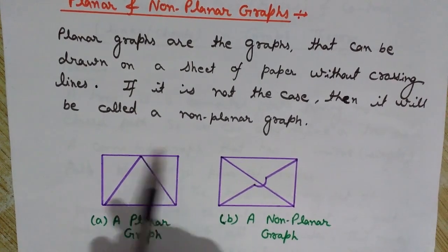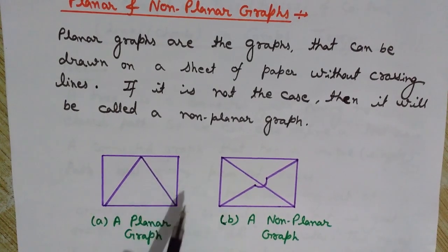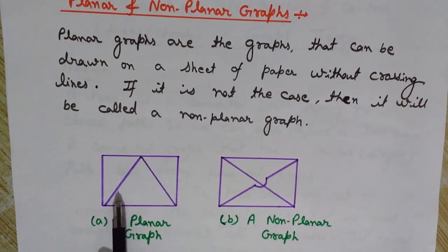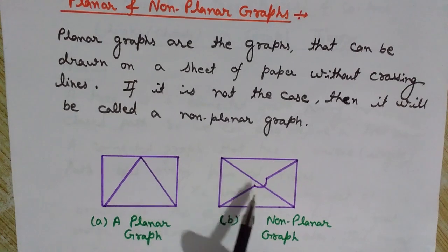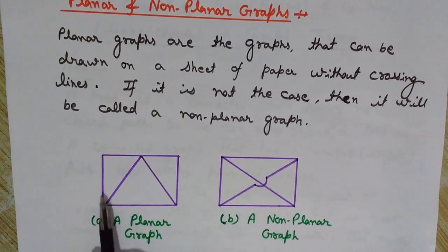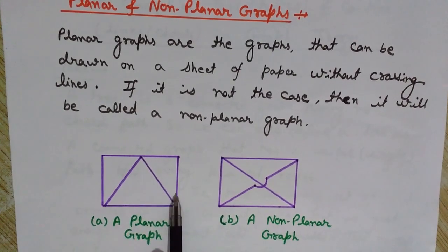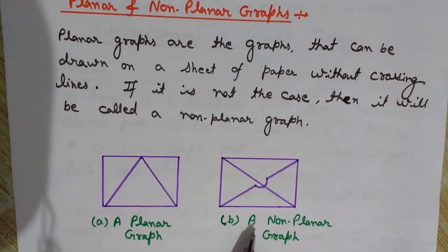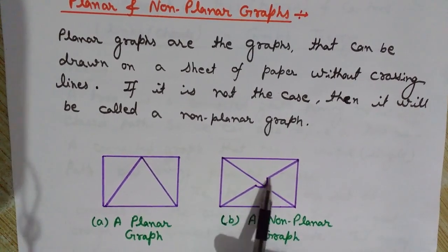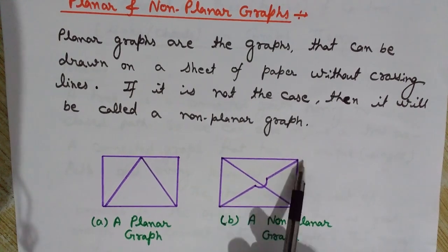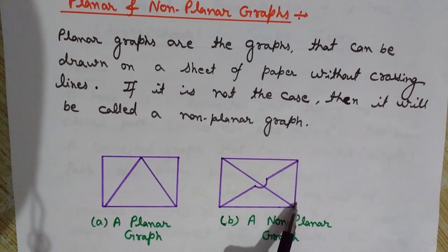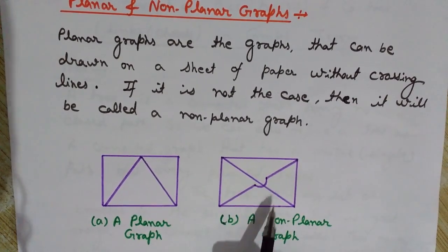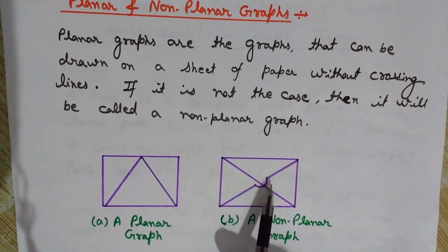Here we have both kinds of graphs shown. These are the nodes and these straight lines are the branches. This is the planar graph — it can be drawn on a sheet of paper without any lines crossing, as you can see no lines are crossed here. Unlike this one, where lines are crossing — this is the non-planar graph, because it has crossed lines. It is not possible to draw a non-planar graph on a sheet of paper without crossing of lines.